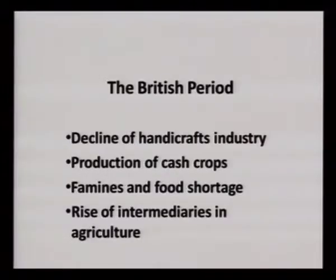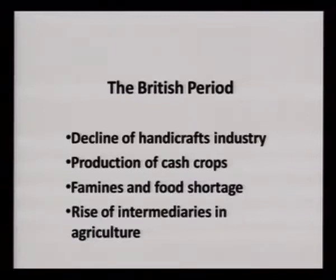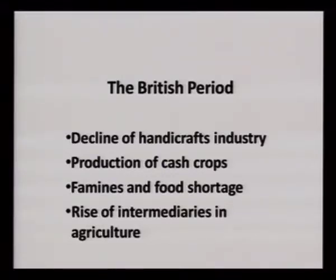First they entered as traders, then they captured the economy, its polity, and influenced the whole society in terms of exploiting its resources for their own benefit. We can understand the British system in the following manner: number one is the decline of the handicraft industry; number two is production of cash crops; number three is famines and food shortage; and number four is rise of intermediaries in agriculture.